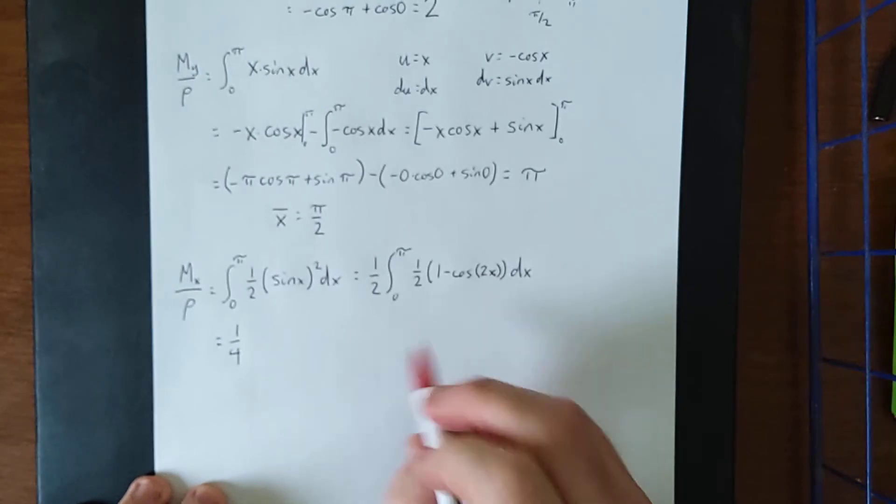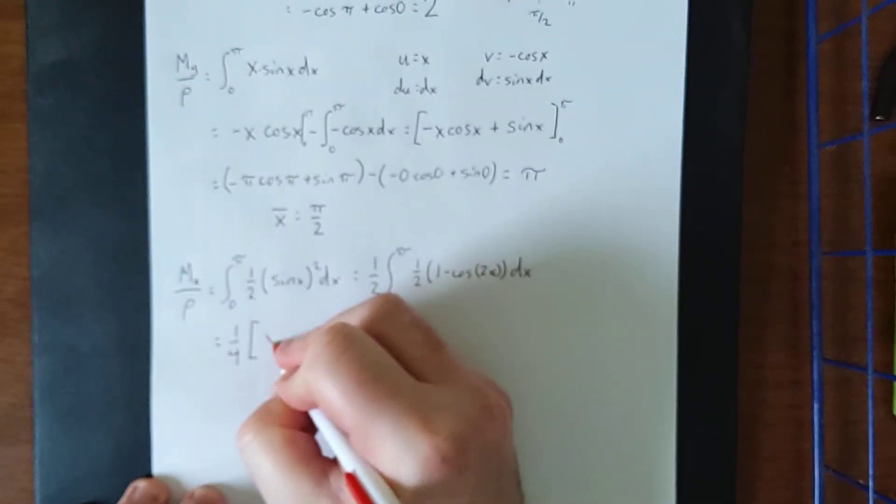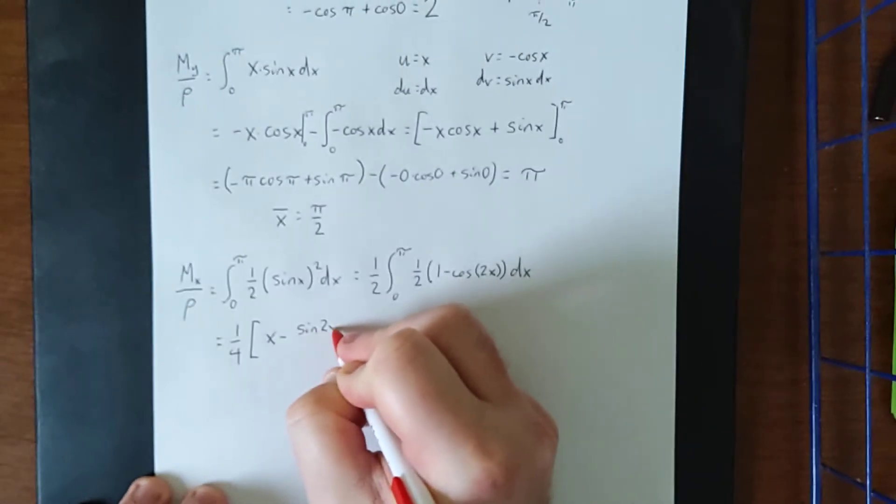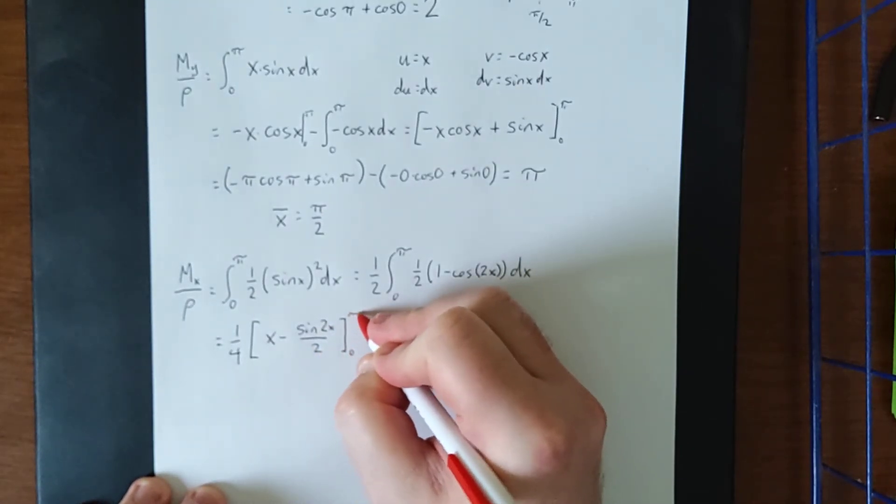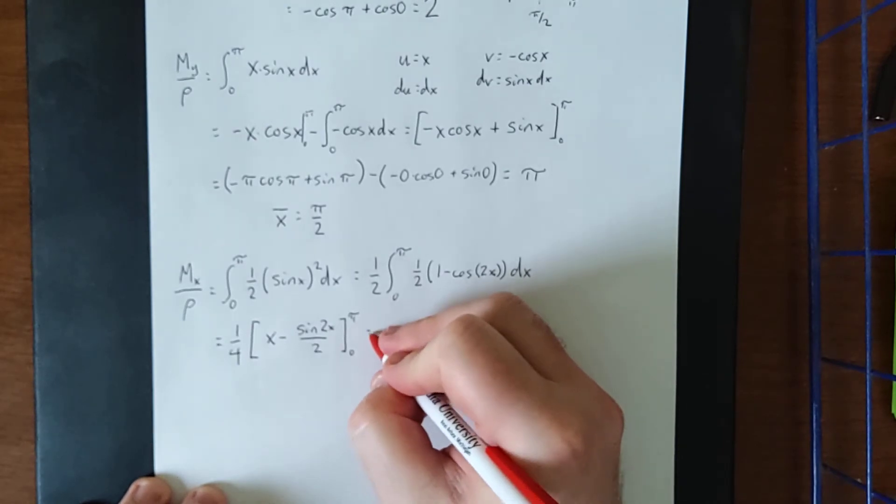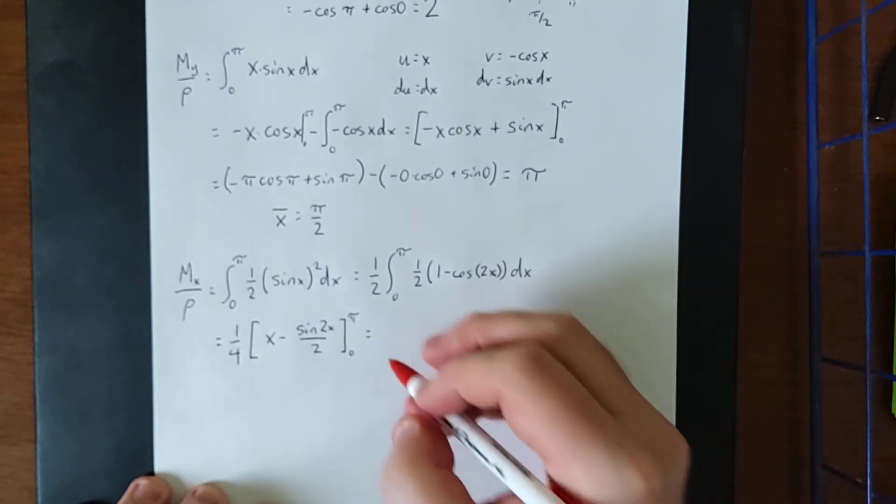And then integrating the other two terms, we are going to get x minus the sine of two x divided by two. This is once more going from zero to pi. Plugging in these bounds, we'll get one quarter of pi minus the sine of two pi over two,